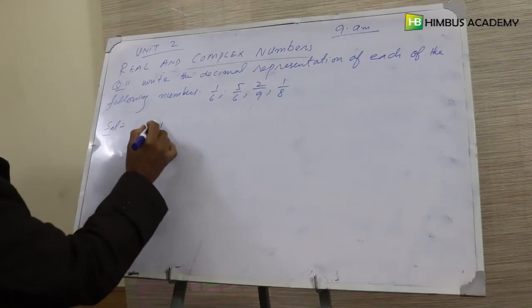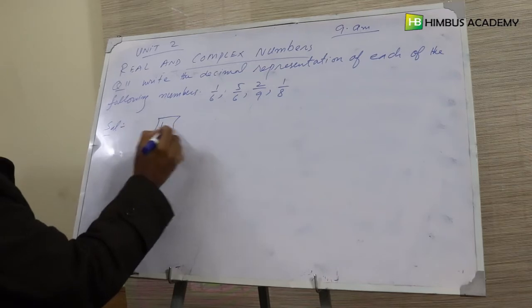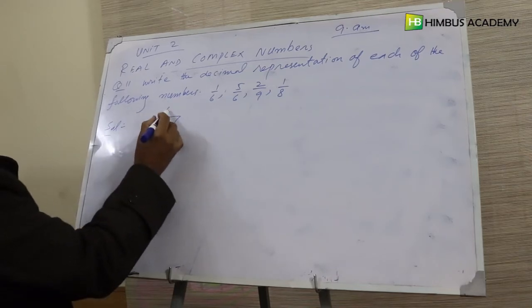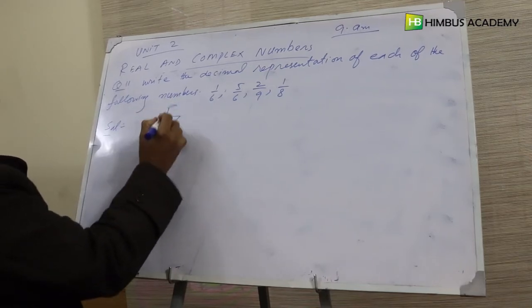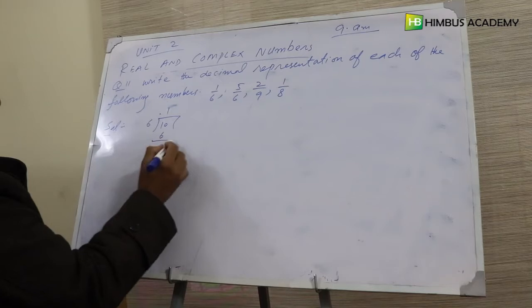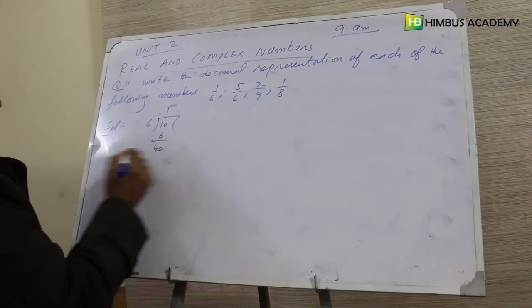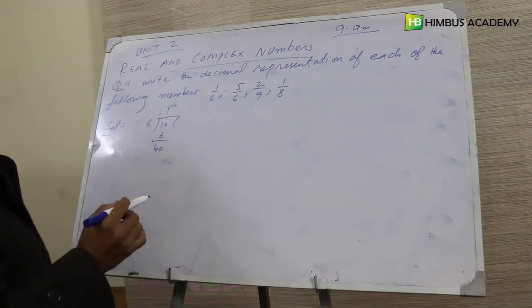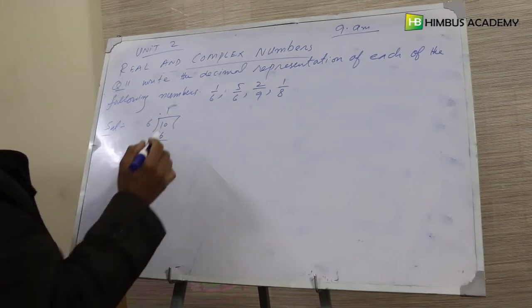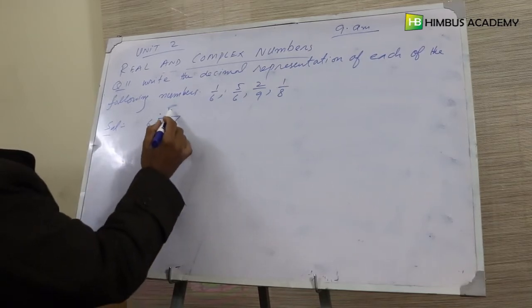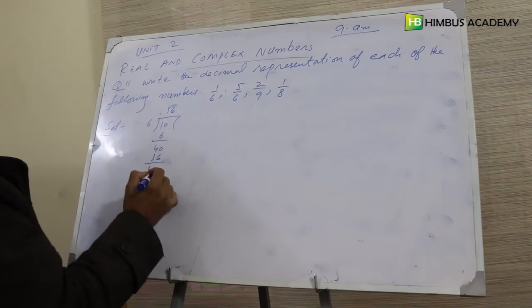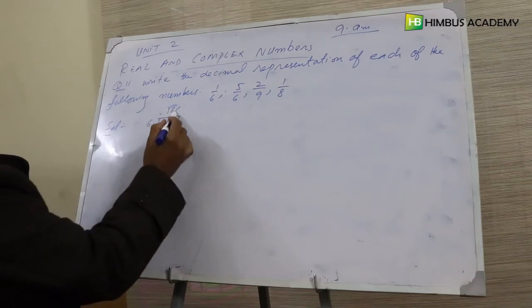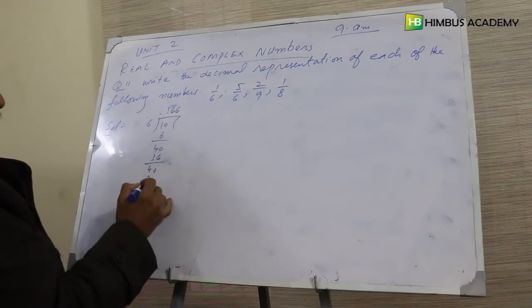1 divided by 6: performing long division, we get 0.1666... repeating. The remainder cycles, giving us the repeating decimal 0.1̄6̄.